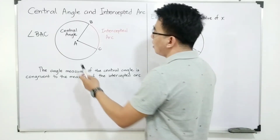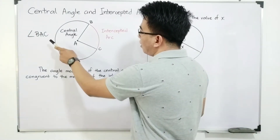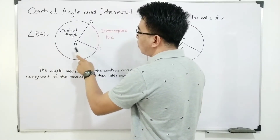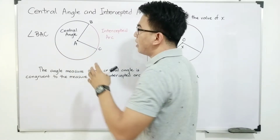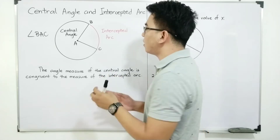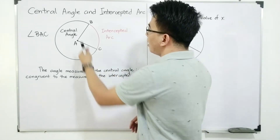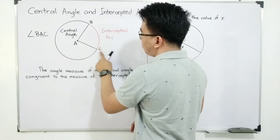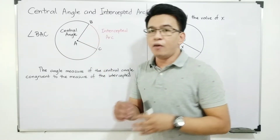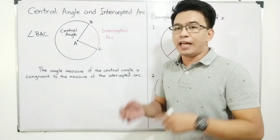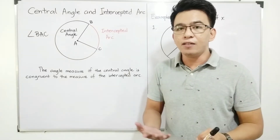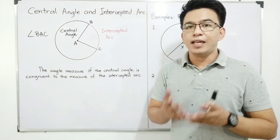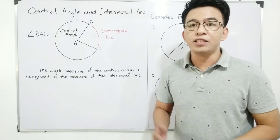As you can see, the vertex of angle BAC is at the center of the circle. And the endpoints of that angle, or the radius of this angle, are on the circle — which are point B and point C. So again, when we talk about the central angle, it is simply an angle wherein the vertex is located at the center of the circle.